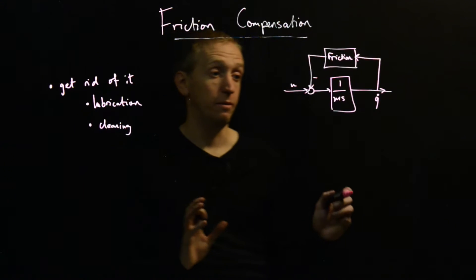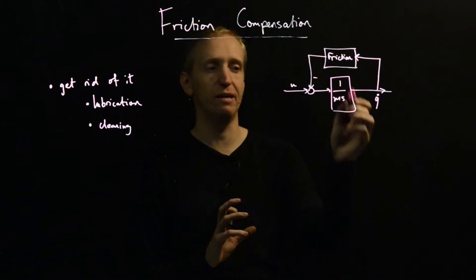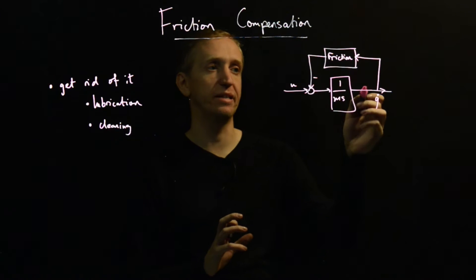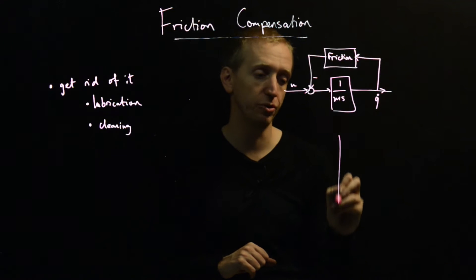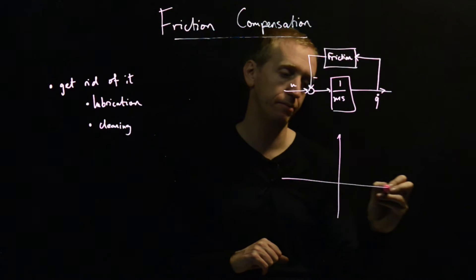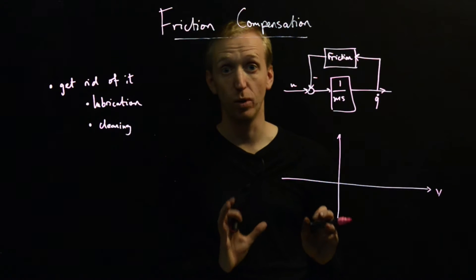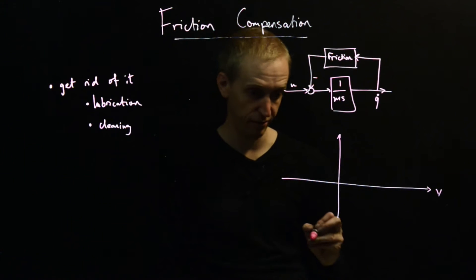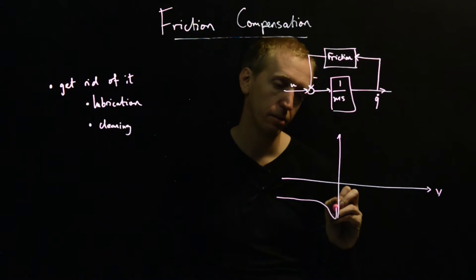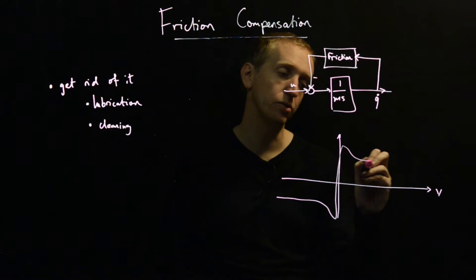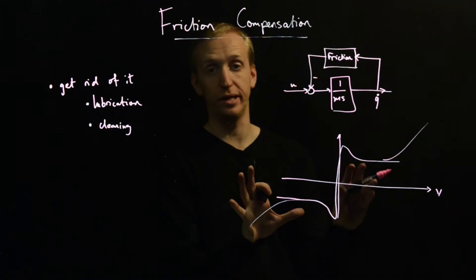To talk about methods for friction compensation, I want to return to our simple picture here, where we have some mass that's experiencing some velocity-dependent friction. When we introduced this before, we talked about these common models of friction, in which the friction force was dependent on the velocity. And we said that curves that look something like this are quite common.